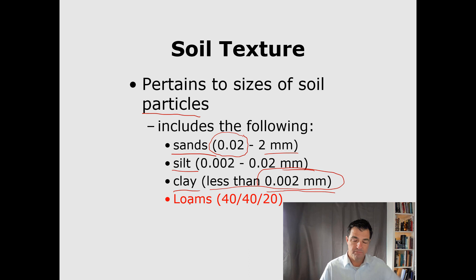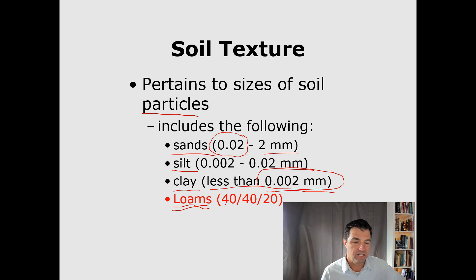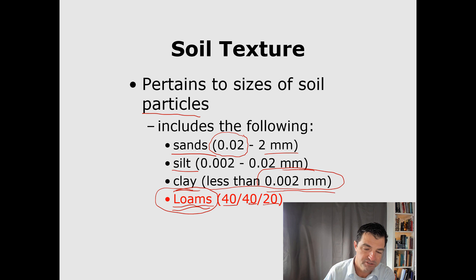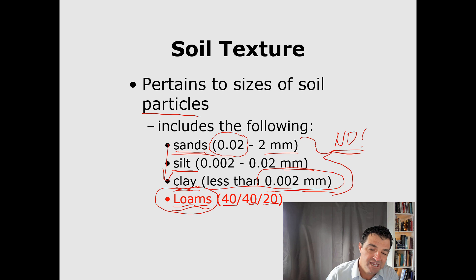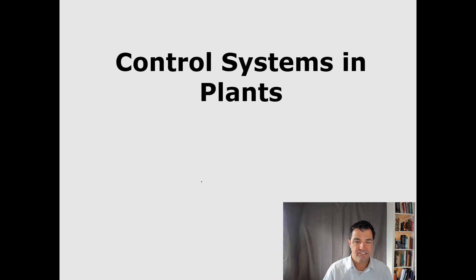Silt tends to be 0.002 to 0.02 millimeters, and clay tends to be very tiny — less than 0.002 millimeters. The best kind of soil to grow most plants is what we call loam. A loam is roughly a 40-40-20 mixture of sand, silt, and clay. We call those the most fertile soils. You don't need to memorize the sizes — just know sand is biggest, silt is in the middle, and clay is smallest.